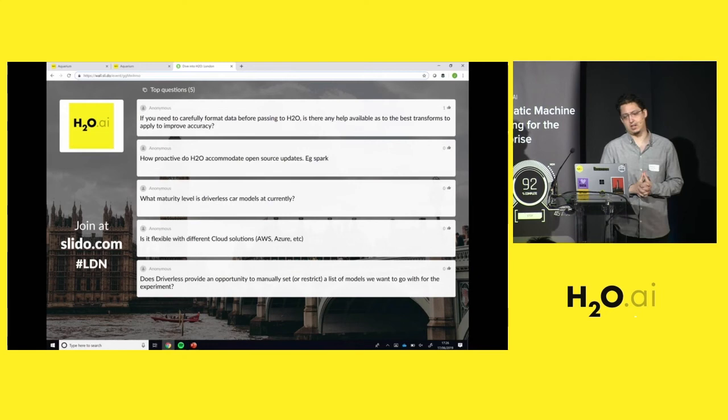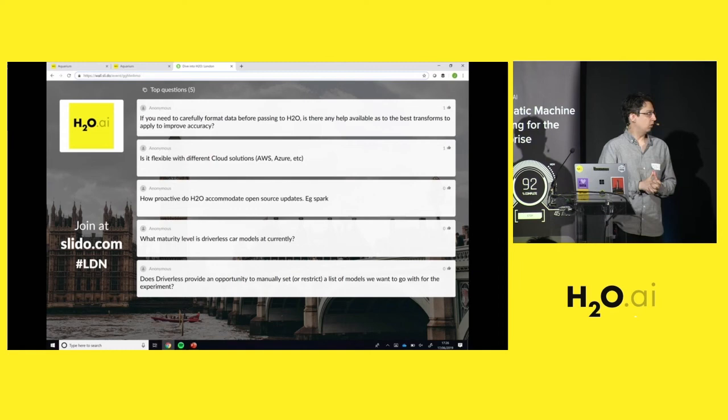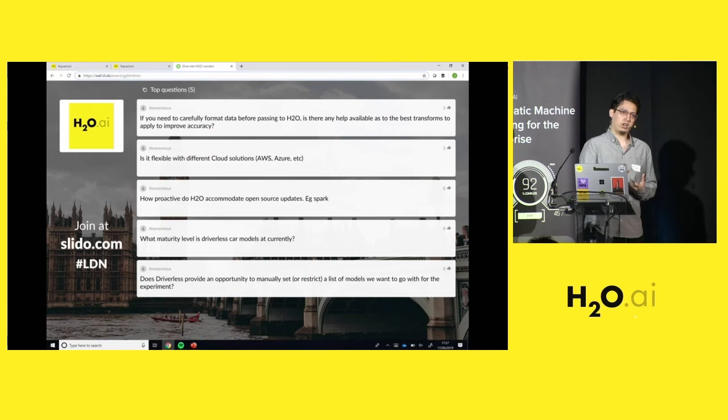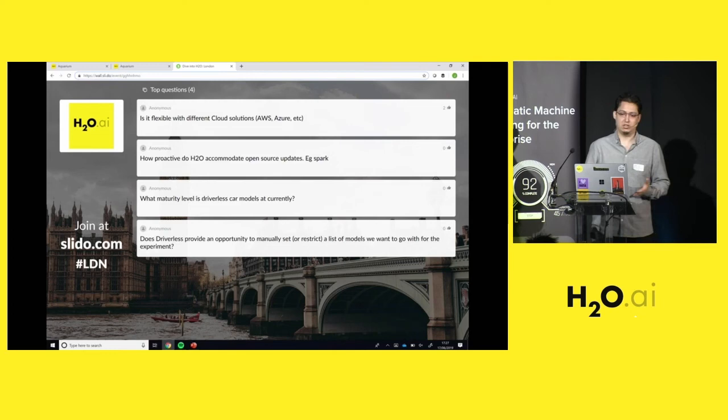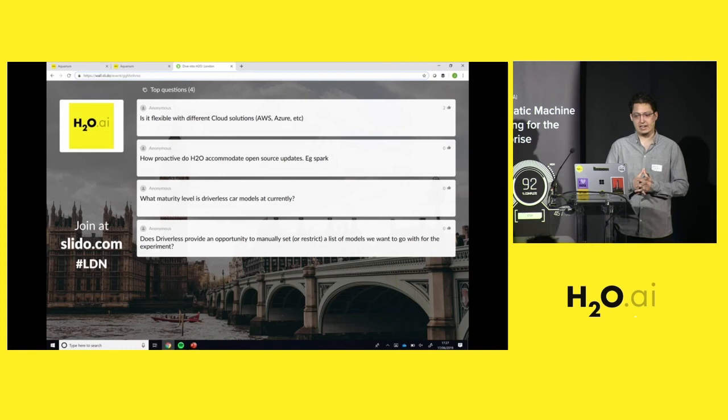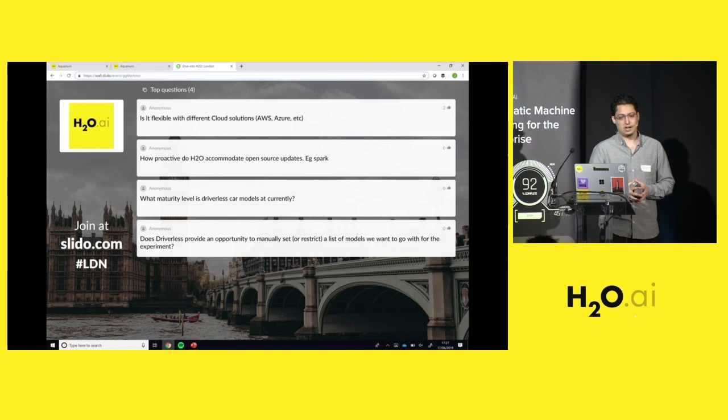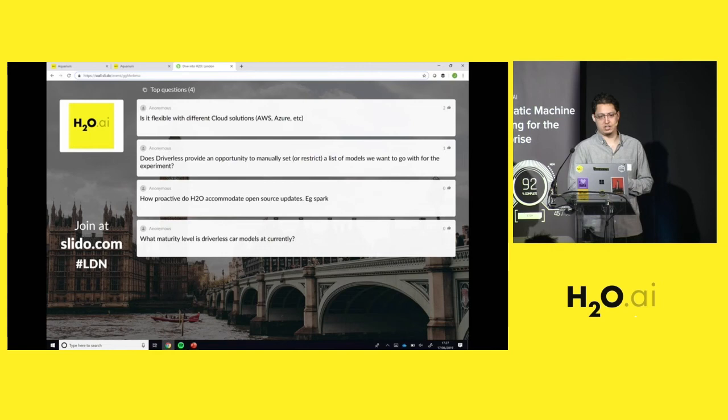If you need to carefully format data before passing to H2O, is there any help available as to the best transforms to apply to improve accuracy? In principle, we like the data in raw format as long as they are in tabular format because we can iterate through different transformations and try to find the best. For example, you have a categorical feature and you decide to put it in as multiple dummy variables, but there might have been another transformation which could have worked better. So actually we prefer people not to do much cleaning. There might be some special cases, particularly on time series, where certain preprocessing might actually help. But in principle we like the data in raw format. We are comfortable working with missing values and unstructured data as in text and find good representations for them.